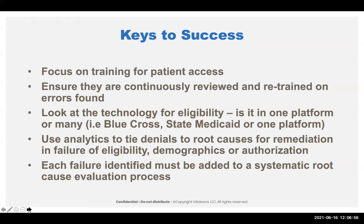We want to look at the technology for eligibility. Many payers will have their own technology. While Epic, Cerner, or Meditech have integrated eligibility as a component of the registration module, other groups like Blue Cross or Medicaid may have a whole separate process module, which gets very confusing and time-consuming. Using analytics to tie denials to root cause is very important. Each failure identified has to be addressed as a systematic root cause.